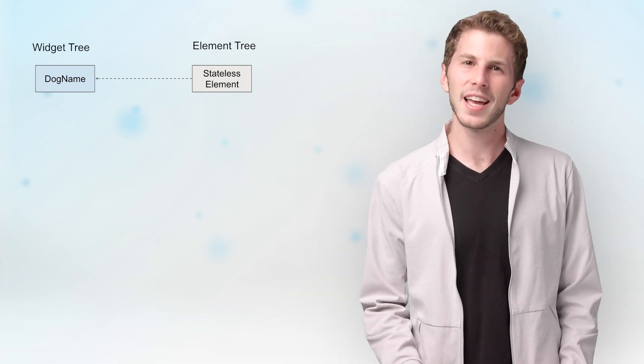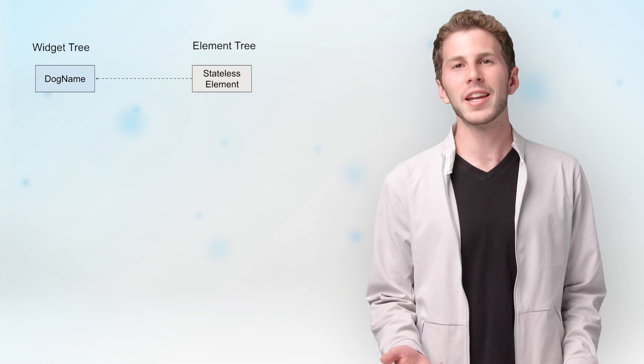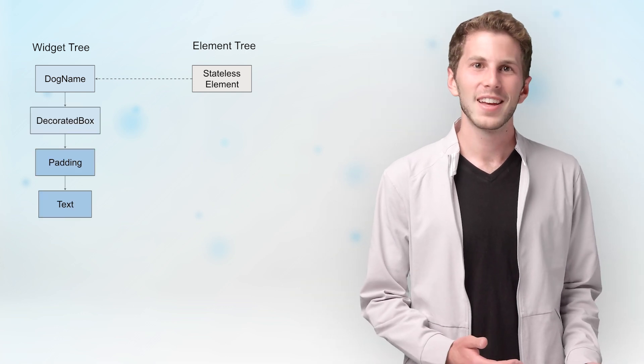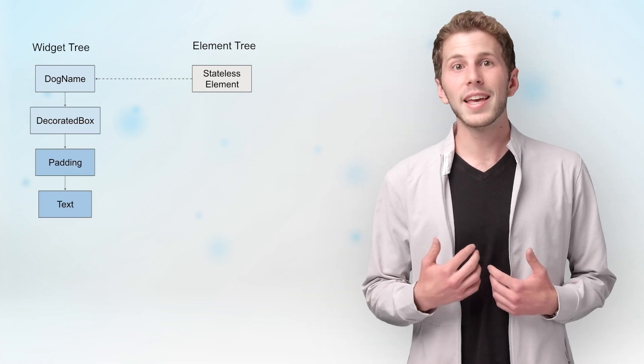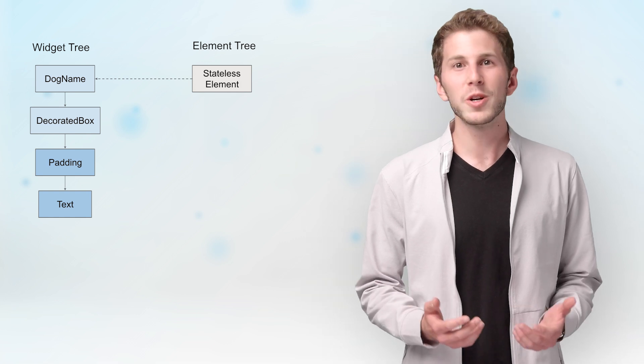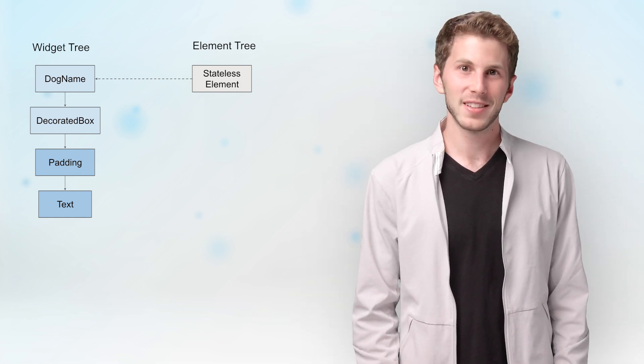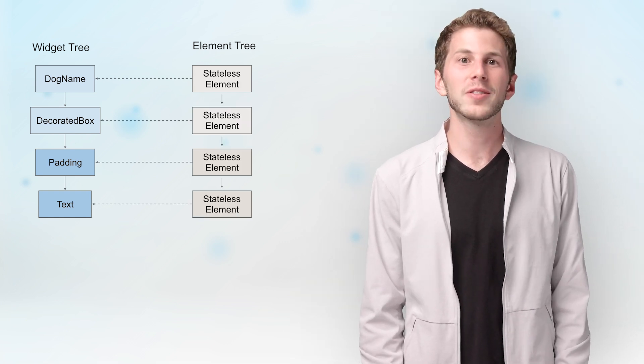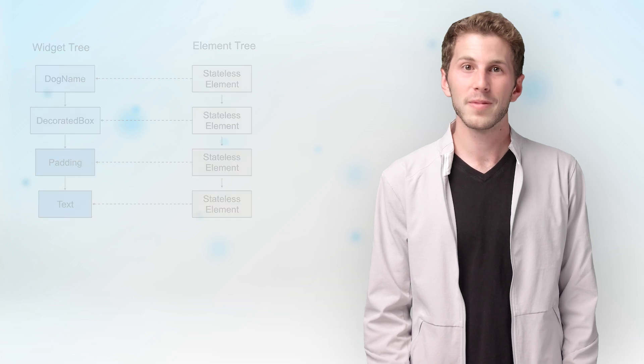The stateless element then says, hey, I wonder if I should have any children, and calls the widget's build method. In the case of my app, it gets quite a few. These widgets then create their own elements and they're mounted on the element tree as well. So my app now has two trees: one that represents what's actually on the screen — the elements — and one that holds the blueprints they were made from — the widgets.